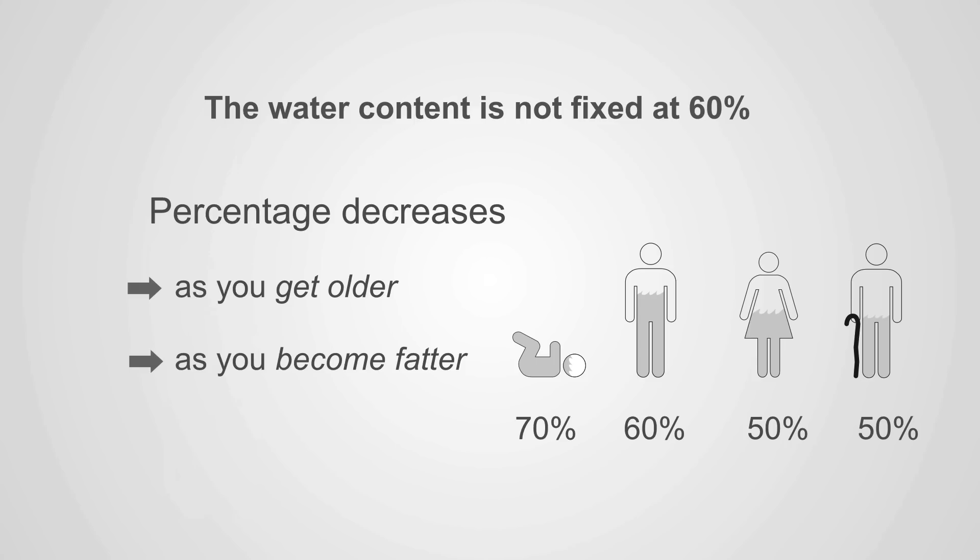But this water content is not fixed at 60%. The percentage decreases as you get older and as you become fatter. Peak water is in infancy when you're about 70% total body water and falls as you get older to about 50% in elderly men. Women, because they have a slightly higher percentage of body fat, tend to have less body water than men.